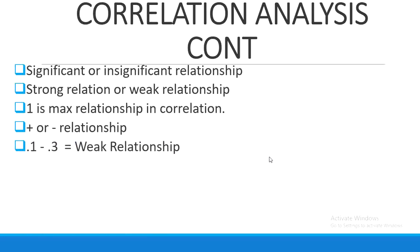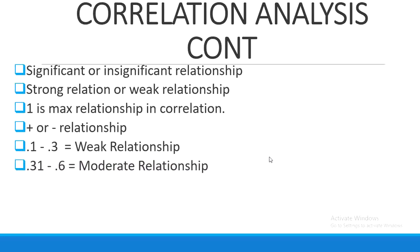A weak correlation is when your correlation falls between 0.1 and 0.3 — that is considered a weak relationship. If your correlation falls between 0.3 and 0.6, then it's considered a moderate relationship. If the relationship is 0.61 or above, then it's considered a strong relationship.